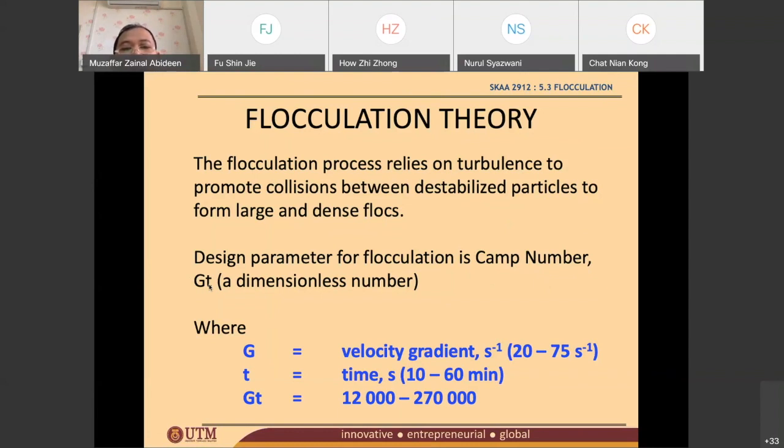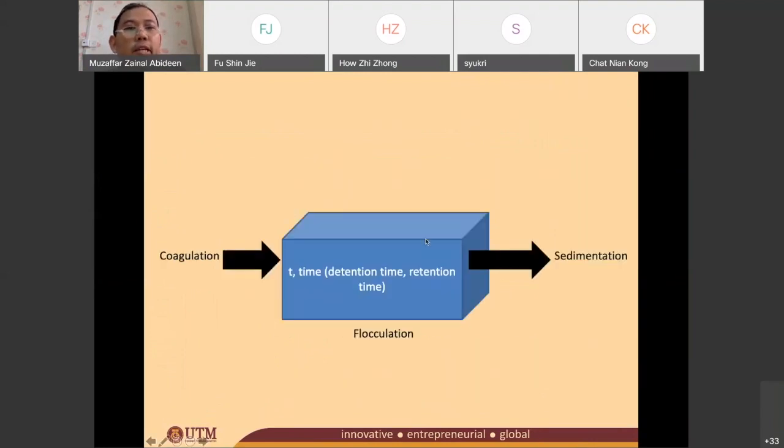What is G and what is t? t is actually time in seconds or in minutes. t is the detention time of the flocculation tank. So if you can imagine, this is your water from the coagulation process. You remember that coagulation, I have two methods: hydraulic method and mechanical methods. That water from coagulation will go into the flocculation tank.